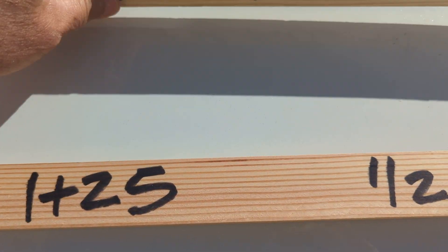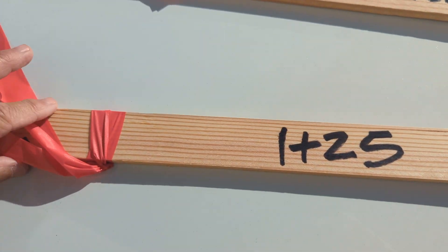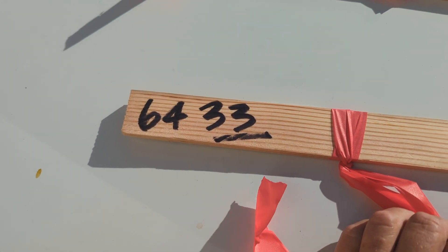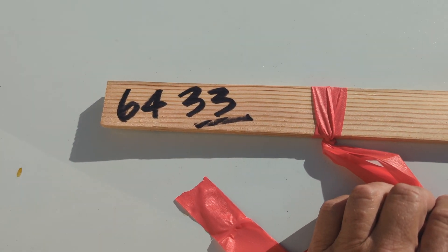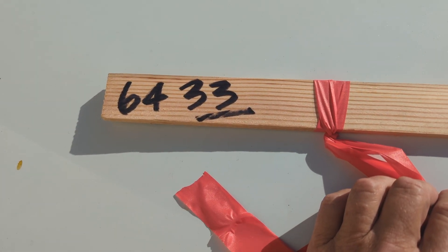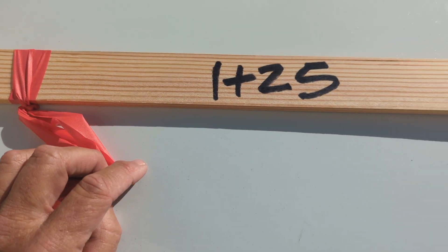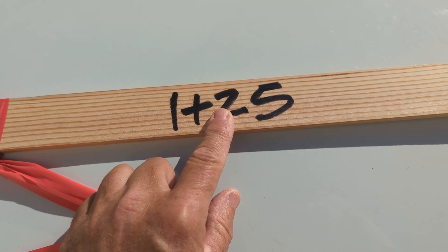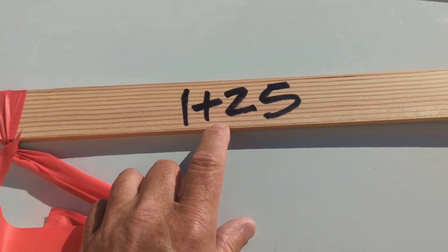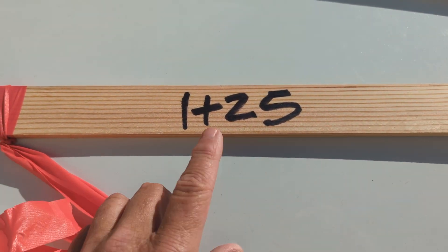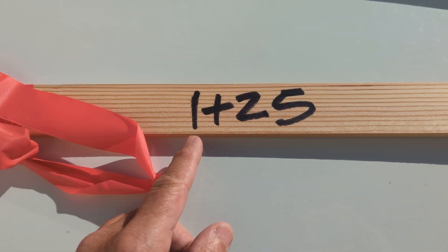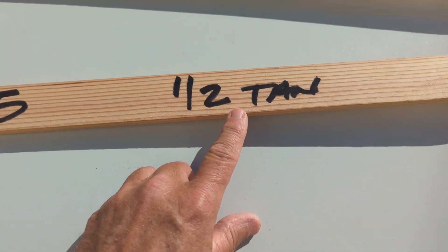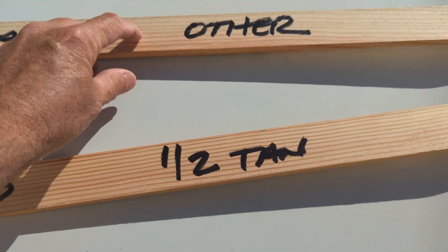And then on the back, an example would be — we just put down tens of feet — but we'd have the elevation on the back, a station: 1 plus 25. That just means it's 125 feet along that line from the beginning.